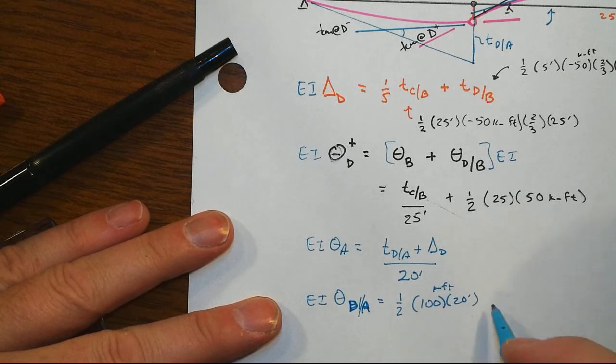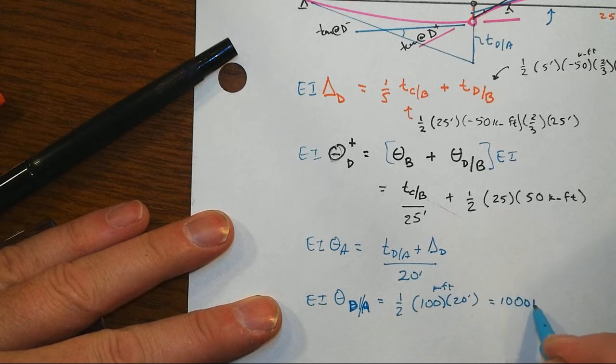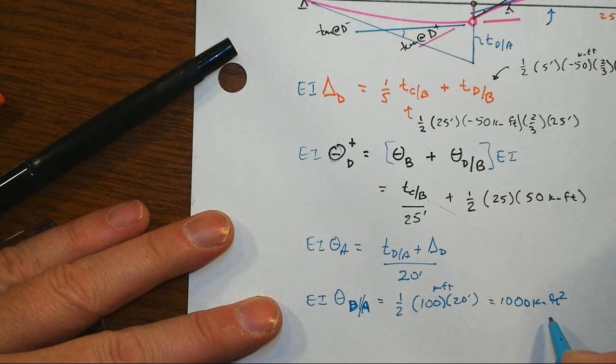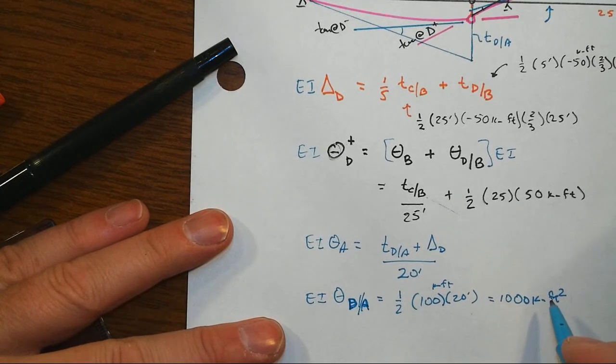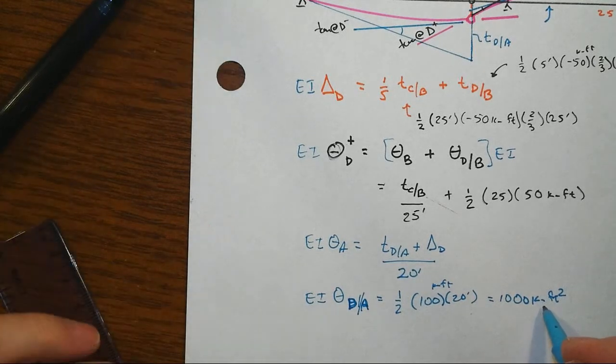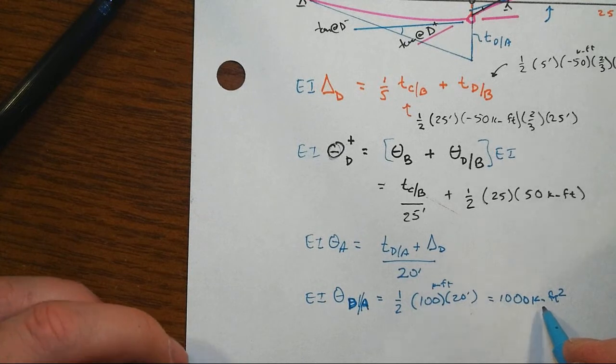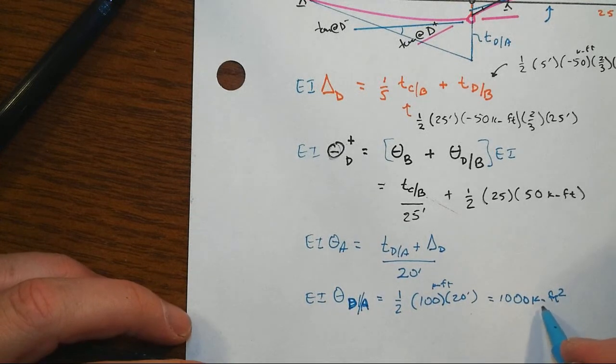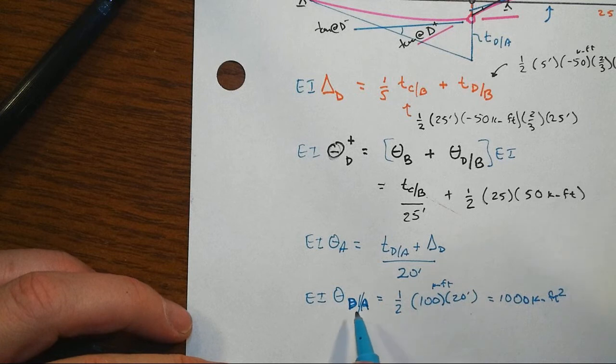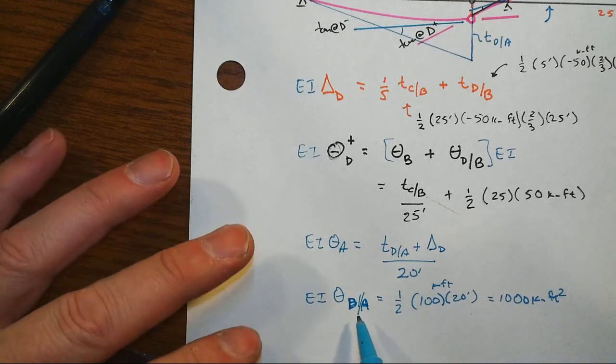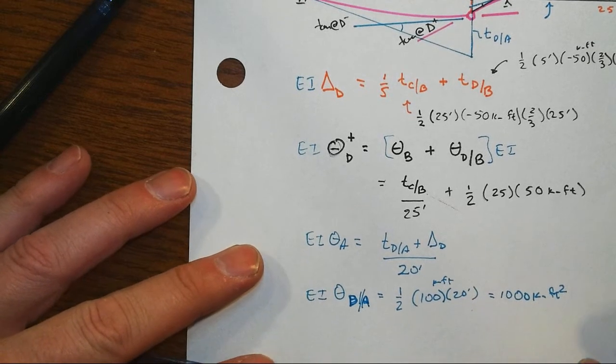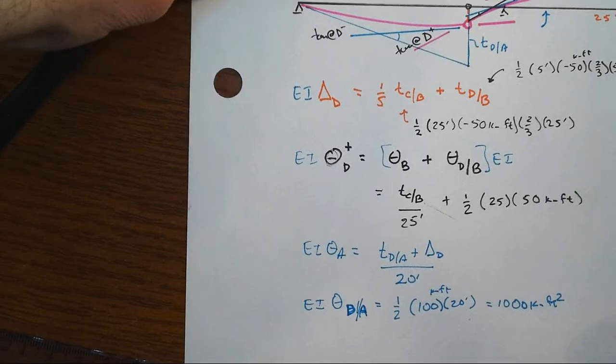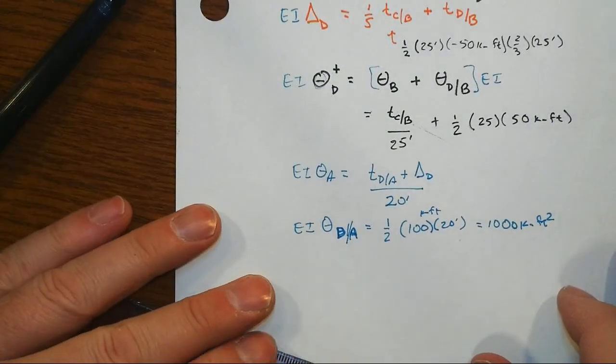Notice the different units here. Kip feet cubed, and we were talking about tangential deviations, and then divide by EI, and so we got one derivative here with respect to X. So to get to slopes, so that's why going from displacement to slopes, you lose one of the length units. And so that gives us theta D with respect to A, and we have to think about what the angle of that is going to be.